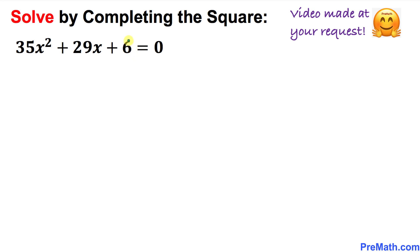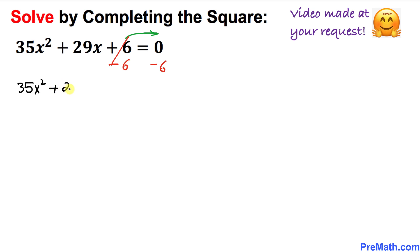The very first thing we're going to do is make sure that we have only x variables on the left hand side. That means this number 6 must go on the right hand side. We're going to subtract 6 from both sides, so we are left with 35x² plus 29x equals negative 6.